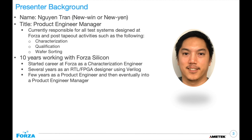I came here straight out of college. My first position was a characterization engineer where I was given a test system — I captured images, analyzed them, and made sure the performance was up to par against the design specifications of that chip. Years later, I became an RTL FPGA designer, mainly using Verilog. I worked with the digital design group on digital blocks for CMOS image sensors, and also worked on firmware for test systems.